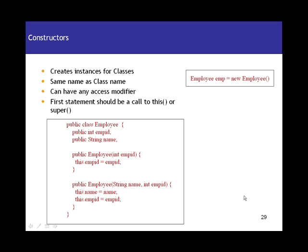Constructors — so what are constructors in Java and why do you use them? Constructors are used to create an instance for a class. Whenever you use the new keyword, a new instance for the class is created on the heap. What exactly are you calling when you say new? You're calling nothing but the constructor for that class.